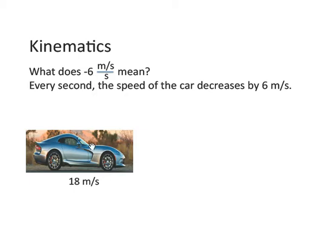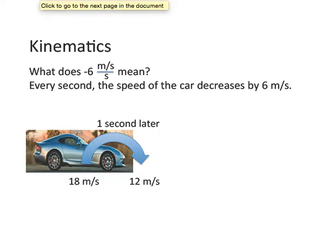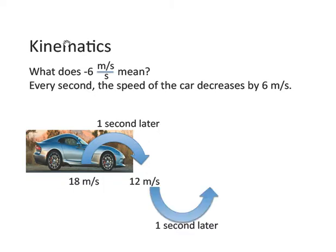Well, if this car starts off at 18 meters per second, and every second, the speed of the car decreases by 6, well, one second later, its new speed would be 12. And another second later, its new speed would be 6. And of course, another second later, it would come to a stop.